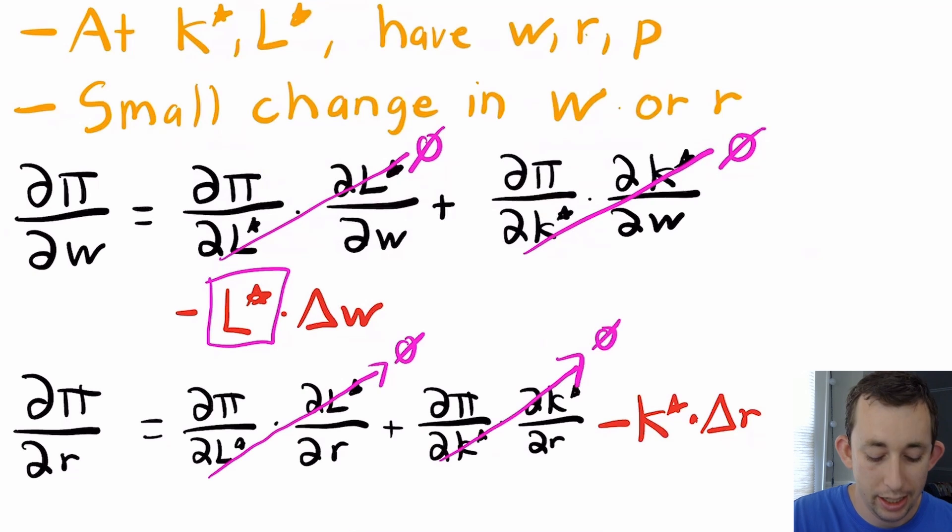The thinking is I won't change the number of people or machines for a small change in wage or rental rate when I'm already at optimal conditional factor demand. The only direct effect is K*, because I have to pay for all my machines a little more. That change in profit is based on the total machines I already have, and that's how I back out K* using the envelope theorem.